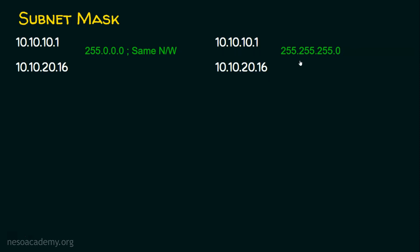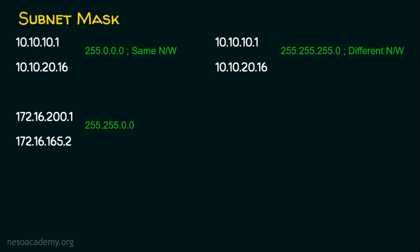Now, focusing on the question: the subnet mask 255.255.255.0 says three octets must match. The three octets that should match are 10.10.10. In the second address, it is 10.10.20 — so they do not match. Therefore, these two devices cannot communicate with the help of a switch because they do not belong to the same network. We need a router to make communication possible between these two devices.